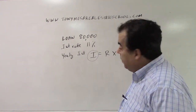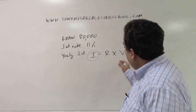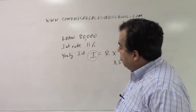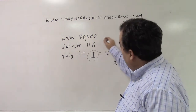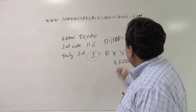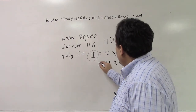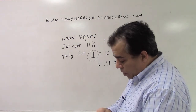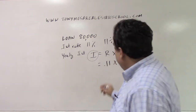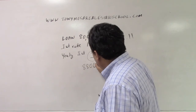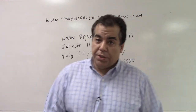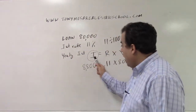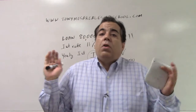The loan value is $80,000. The interest rate: 11 ÷ 100 = 0.11. So $80,000 × 0.11 = $8,800. That is the yearly interest — because in Irv the Banker, the I is the interest per year.